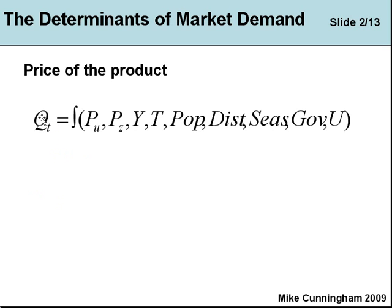The symbols here are as follows. QT is the quantity demanded per unit of time — it's a flow concept. Flow means over time, so it's my demand for petrol per week, per unit of time. The quantity demanded per unit of time equals — and this sign here means 'depends on'. In mathematics it means integration, but we'll use it as shorthand for 'depends on'.